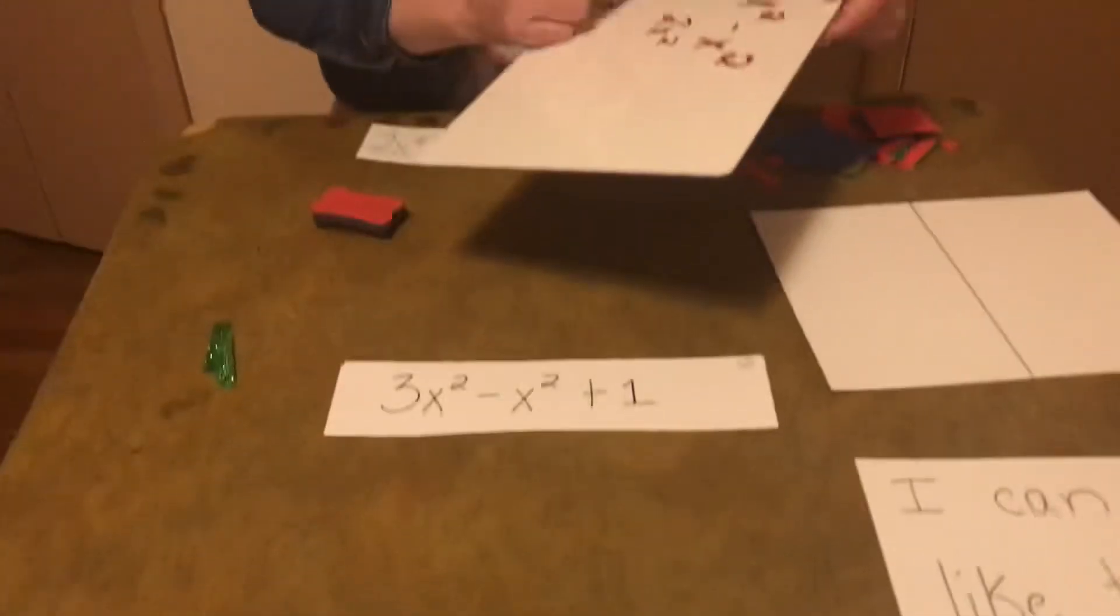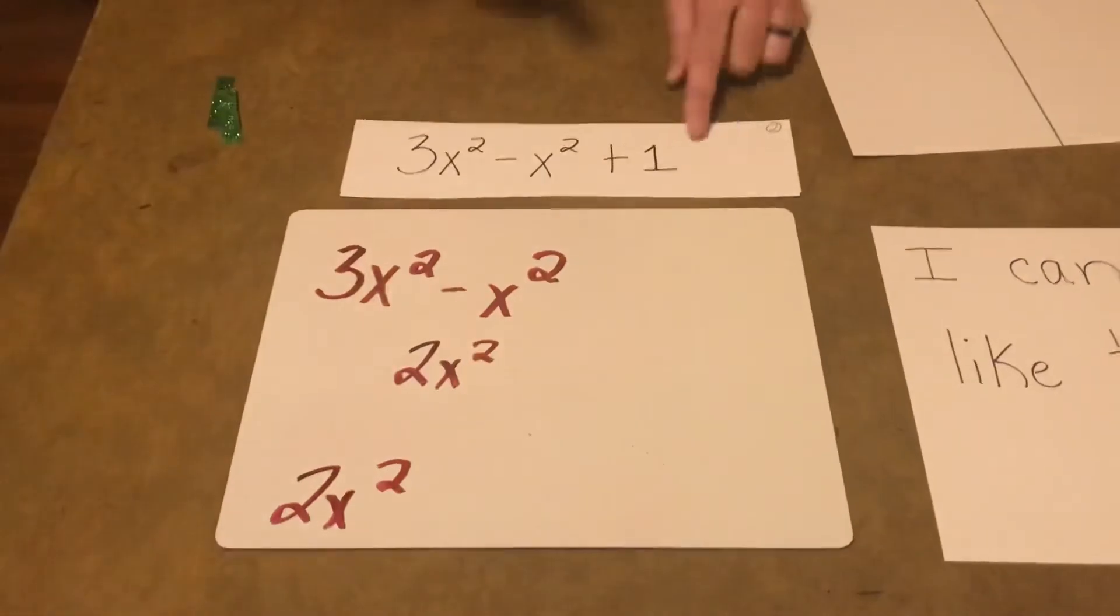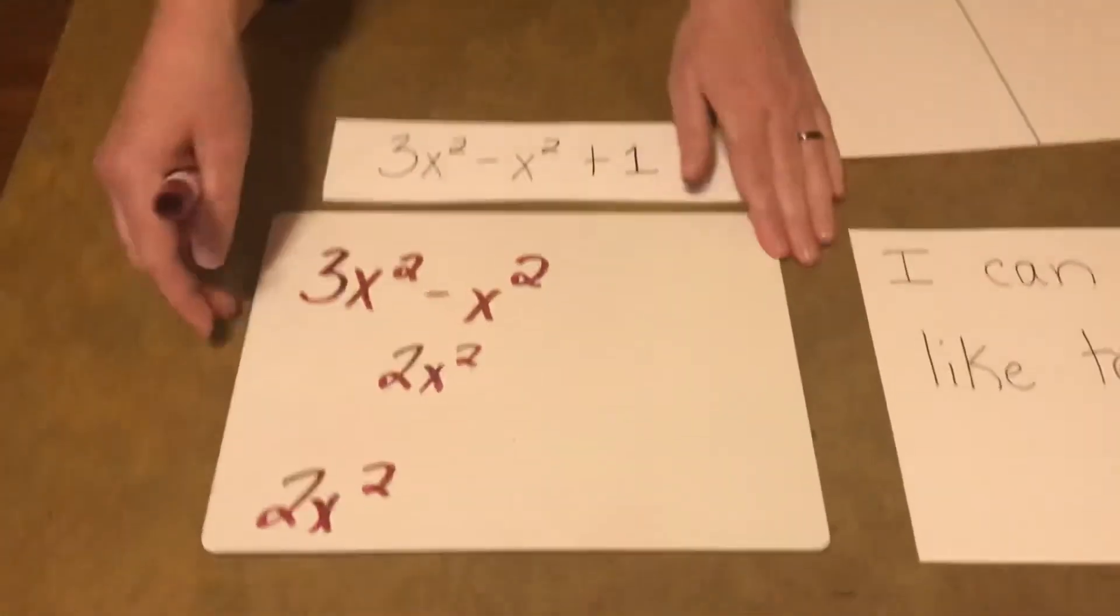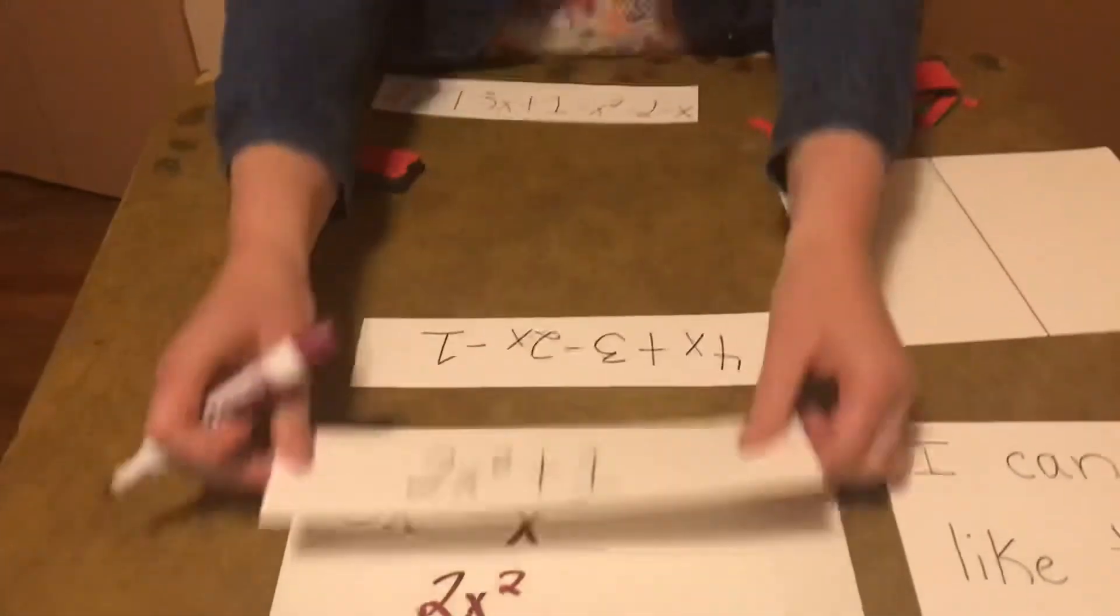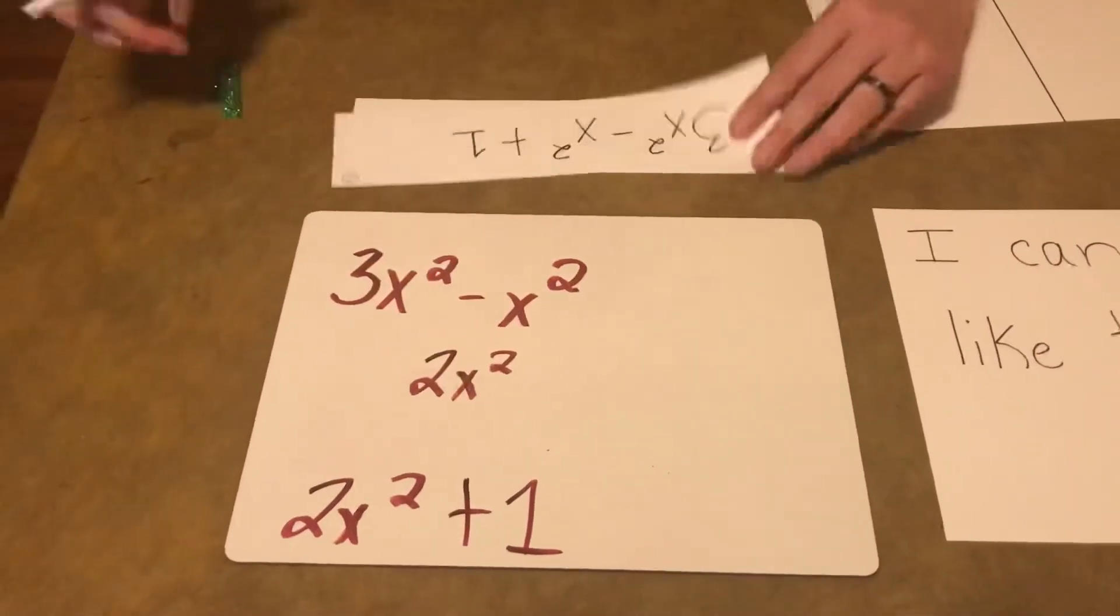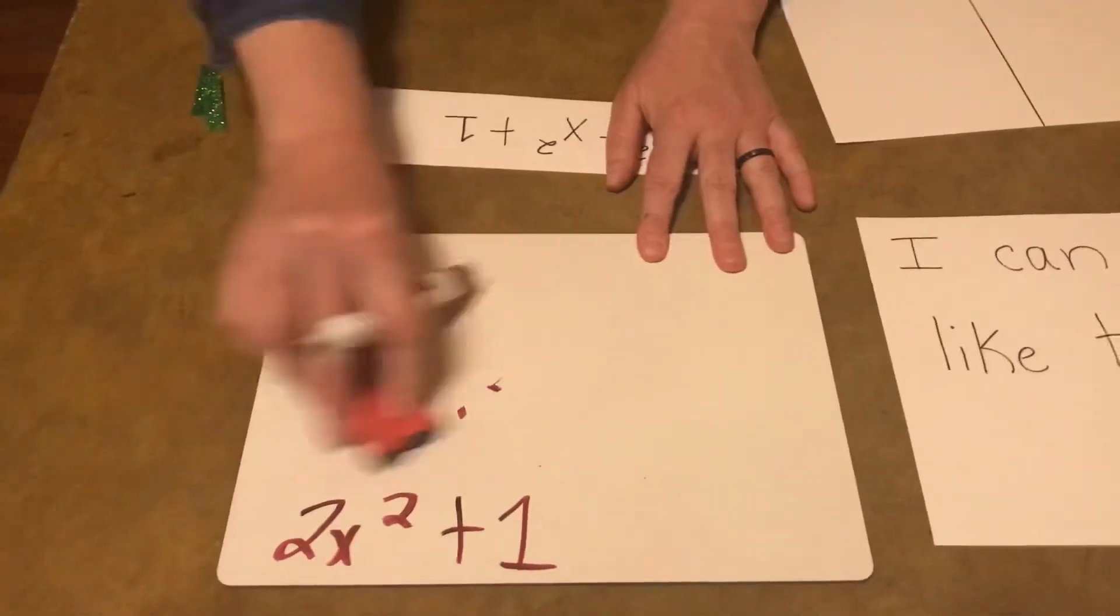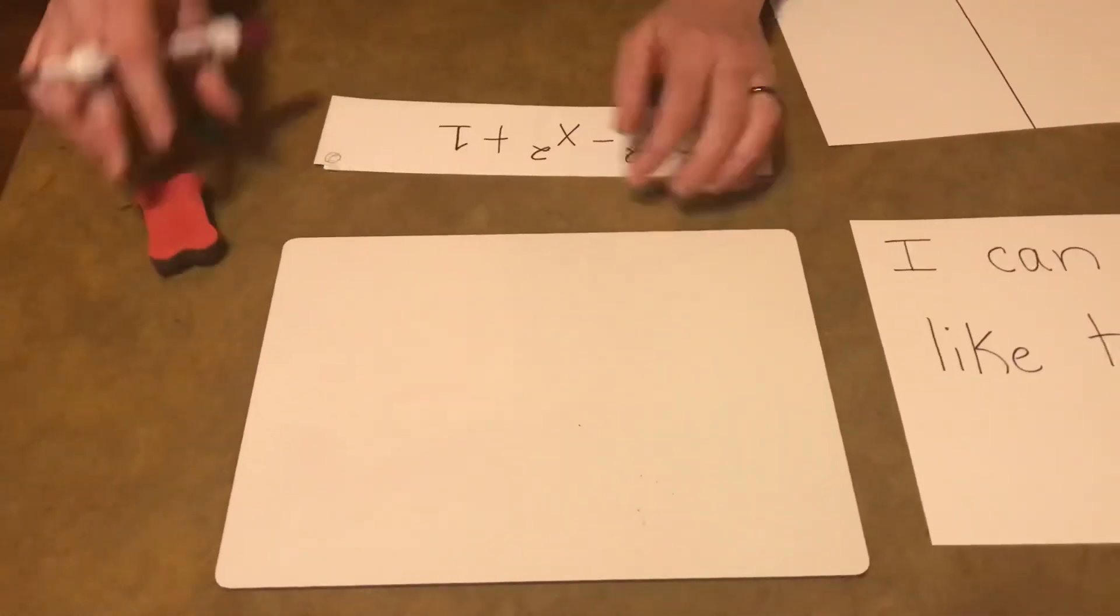And we're just going to write it on the bottom. And the only thing left we have is one. So we're going to add our one. Well, let's see how we did. 2X² plus 1. Awesome. We are ready for our harder one. Are you guys ready? Okay. Here we go.